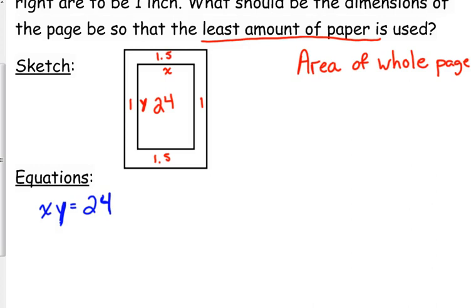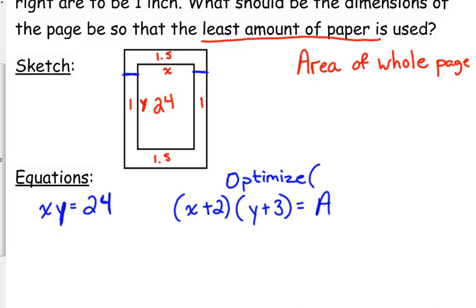So how can I express the area of the whole page? Well, if my variable X here, what can I do to that to express the entire width of the page? What would be the entire width? X plus 2. Y plus 3, or height, whatever you want to call it. That is the area that we are trying to optimize. And specifically, we want the minimum.